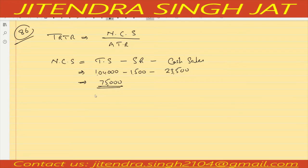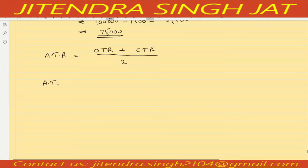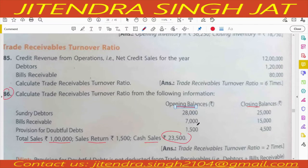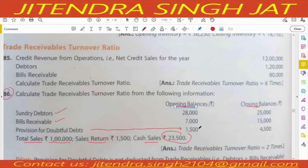Now we calculate average trade receivable: opening plus closing divided by 2. Opening trade receivable means debtors and bills receivable — 28,000 plus 7,000. Provision for doubtful debt is also given, but while calculating trade receivable turnover ratio we do not include provision for doubtful debt. The reason: our purpose is to check the exact efficiency to generate sales, and provision for doubtful debt is an internal arrangement.